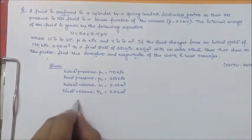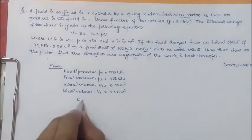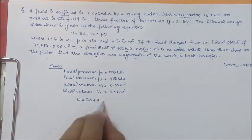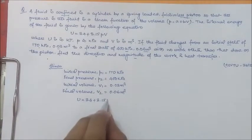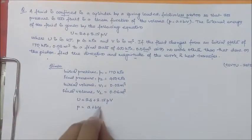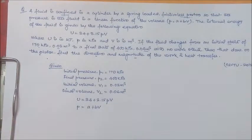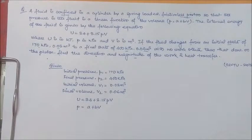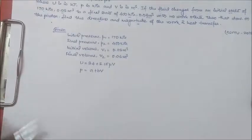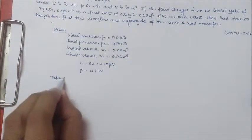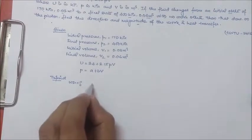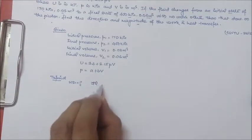final volume V2 as 0.06 m³. Also, we have the equation for internal energy as 34 plus 3.15 PV and P equal to A plus BV. What we have to find out: work done and heat transfer.